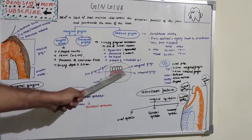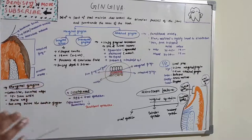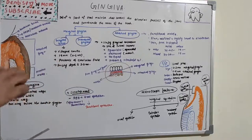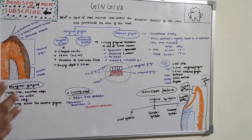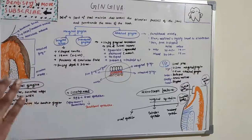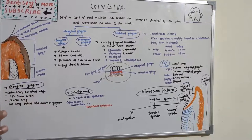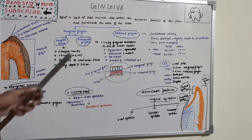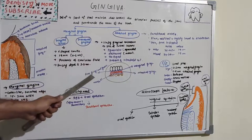Marginal gingiva is a free gingiva which is not attached to the teeth. You can see it just around the teeth, forming a small groove or small sulcus around the teeth. It is also known as free gingiva because it is free to move and flexible in nature. Attached gingiva is attached to the underlying alveolar bone and is not movable. Marginal and attached gingiva are separated by a groove known as the free gingival groove.